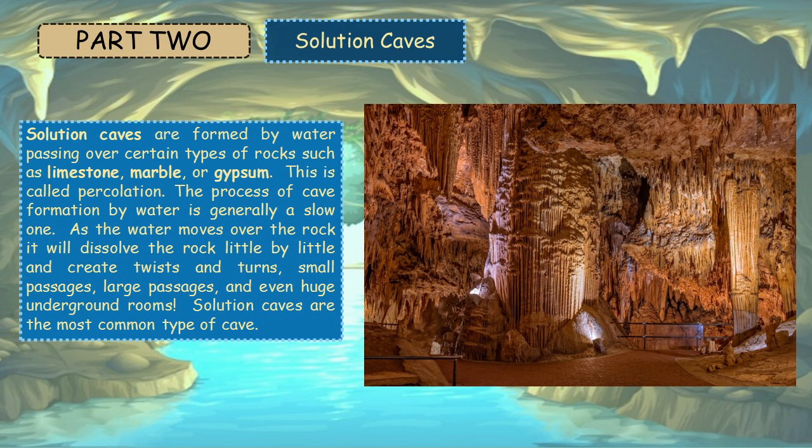This is called percolation. The process of cave formation by water is generally a slow one. As the water moves over the rock, it will dissolve the rock little by little and create twists and turns, small passages, large passages, and even huge underground rooms. Solution caves are the most common type of cave.